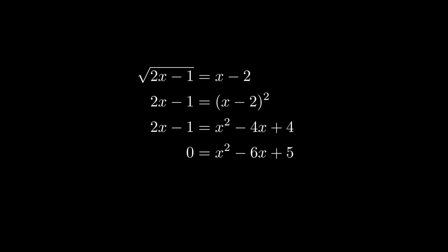This is a quadratic equation, and we could solve it in any number of ways. With this example, we can just factor it. The factors x minus 5 and x minus 1 tell us that the solutions to this equation are x equals 5 and x equals 1.